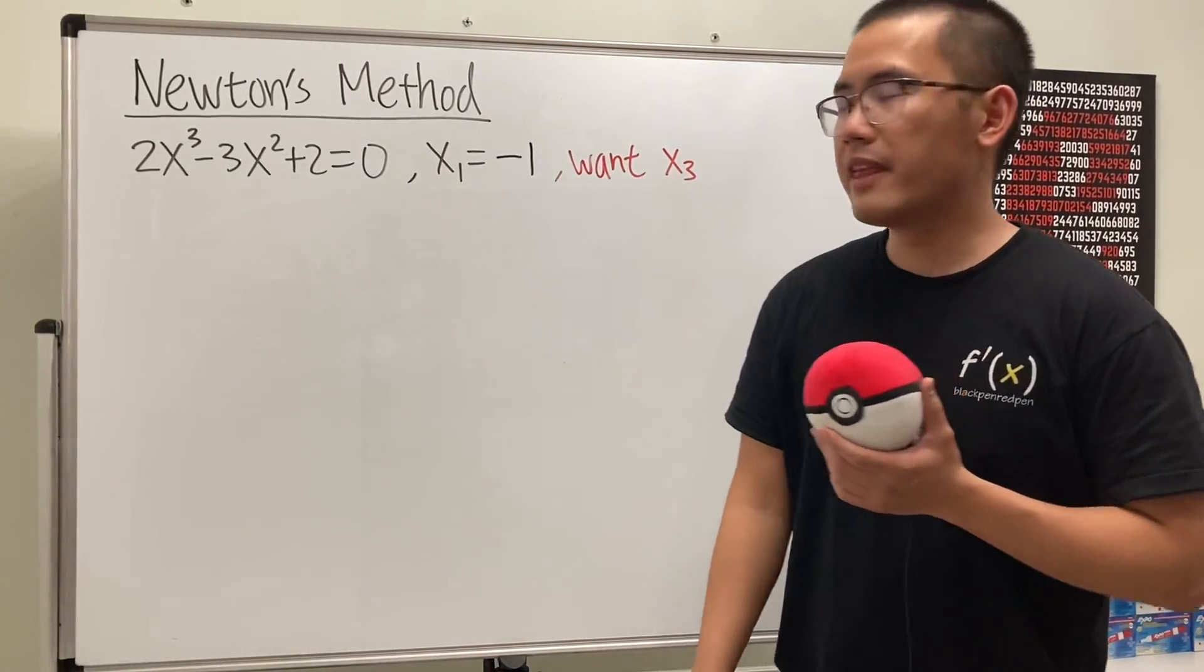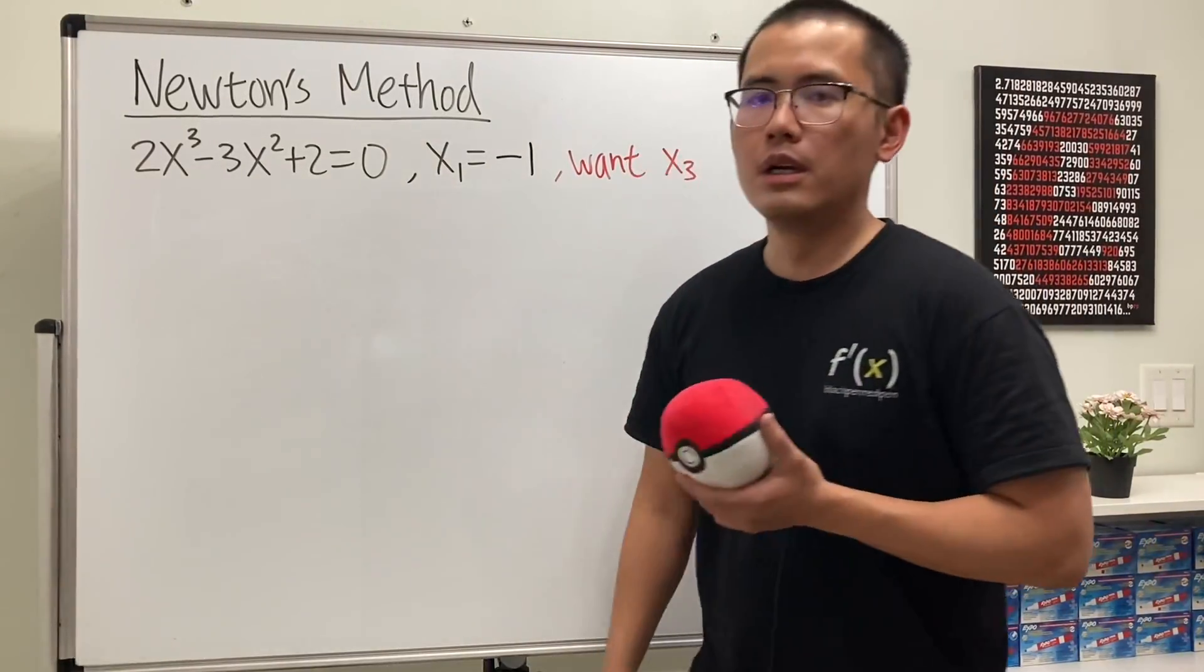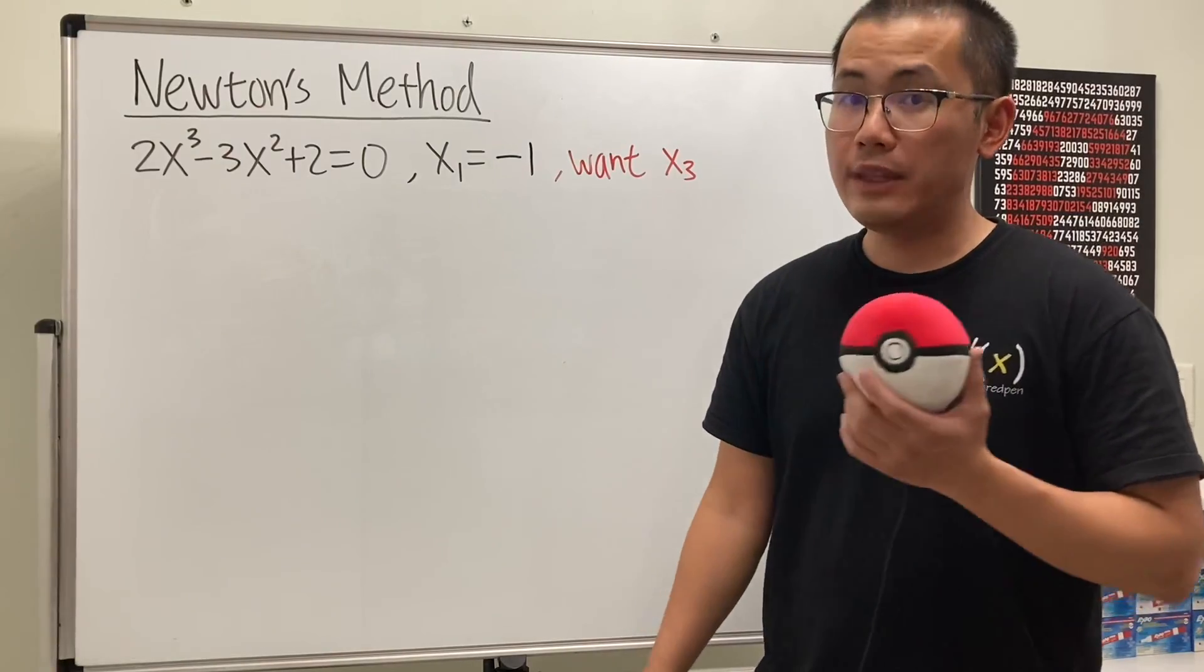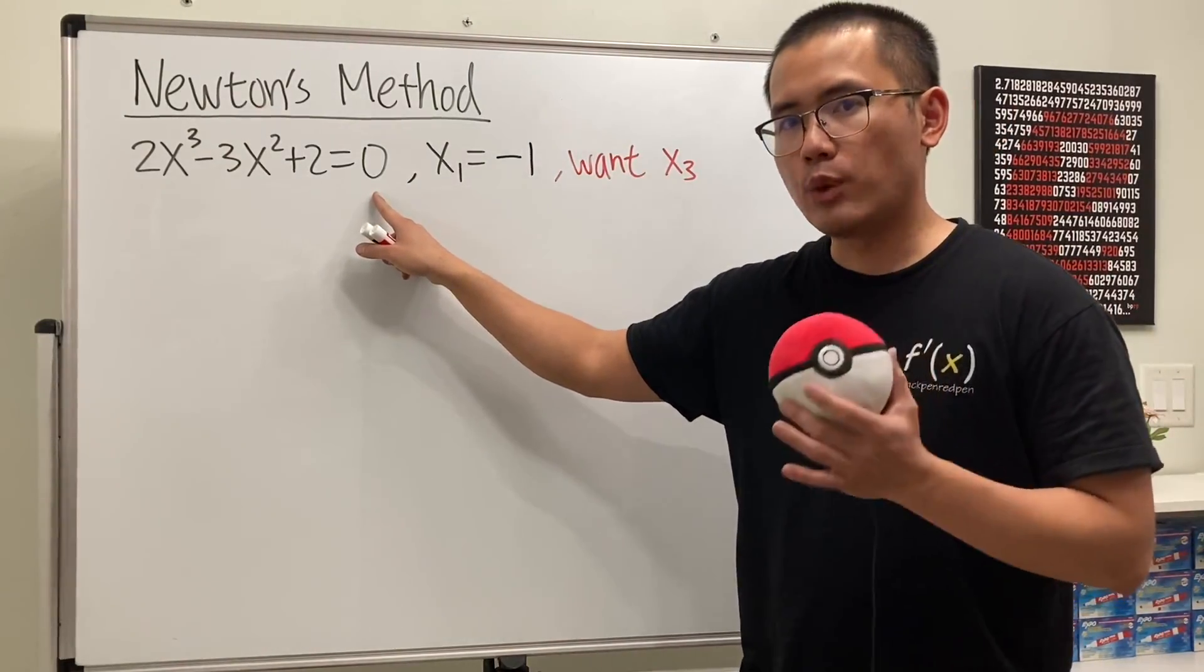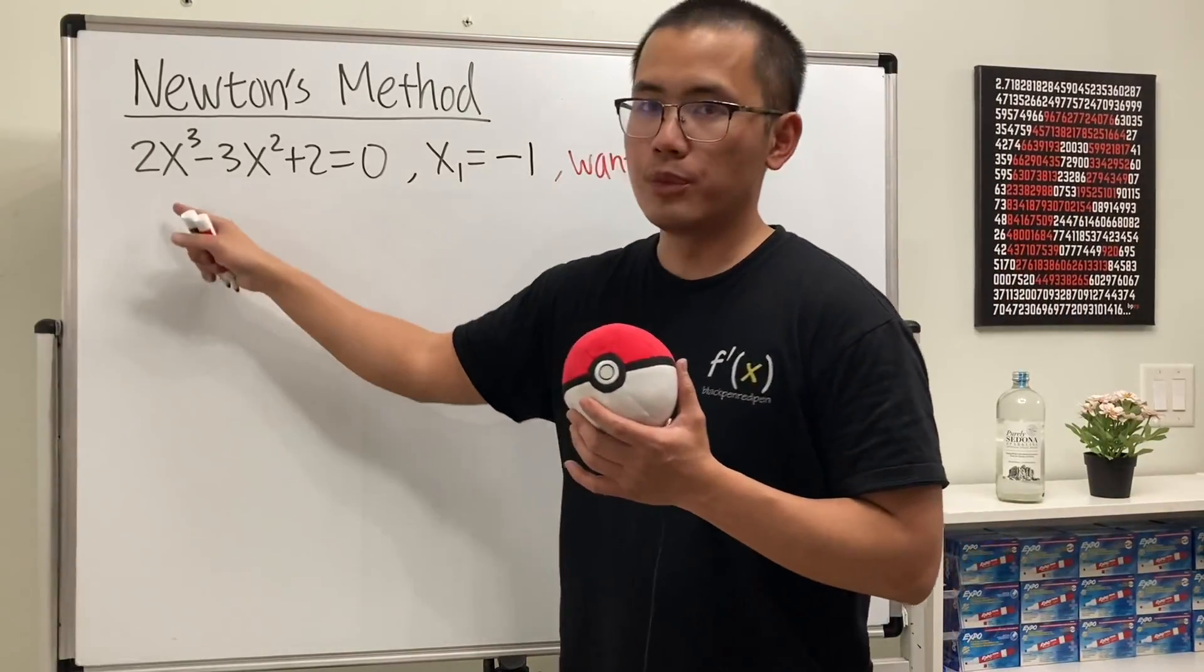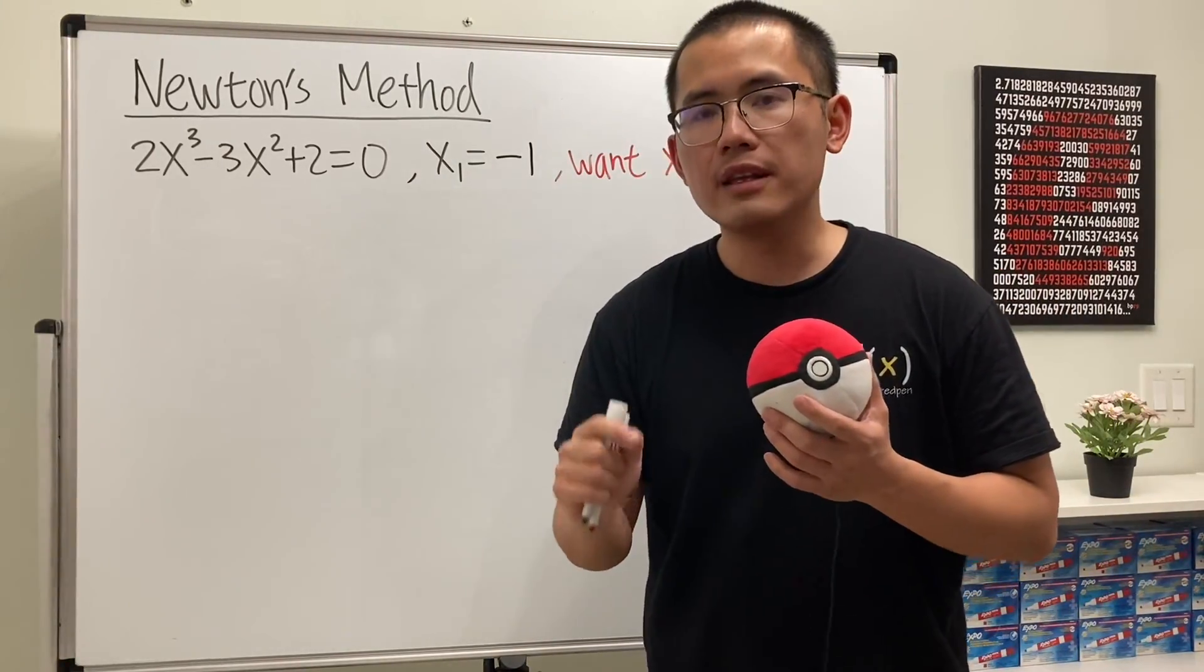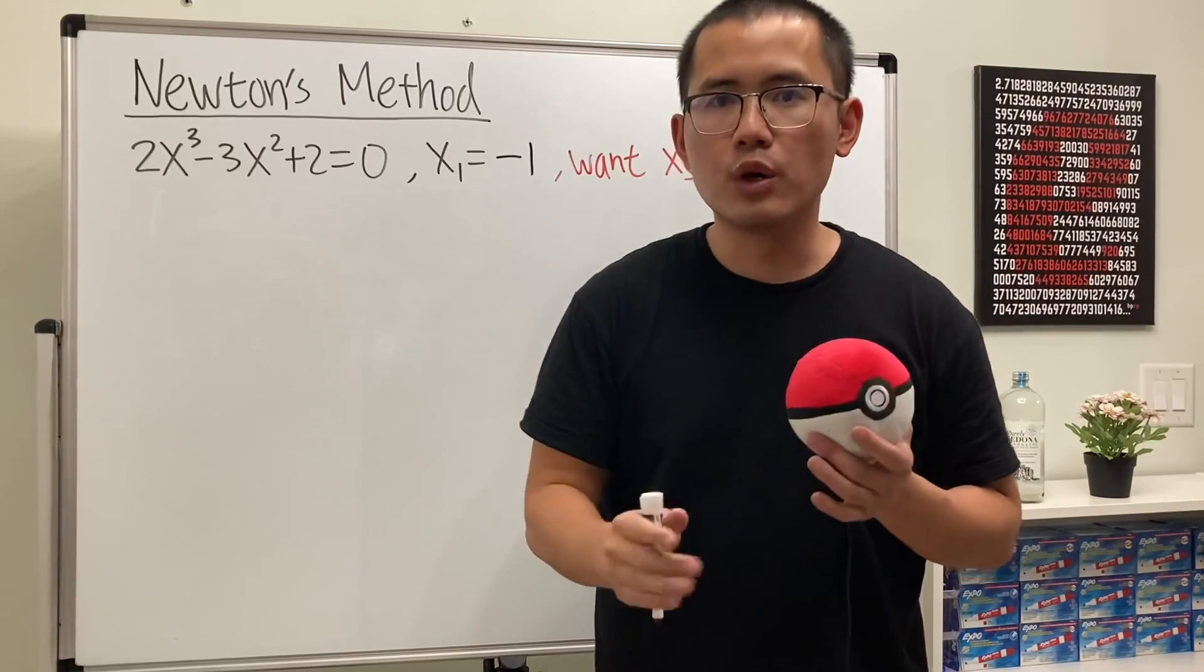Okay, let's see how we can use Newton's method to solve this equation right here. So of course, we need to have a function, and notice that this is equal to 0 already, and that's exactly what we need. Just pick this to be a function, because Newton's method is only good for solving for the 0s of a function.